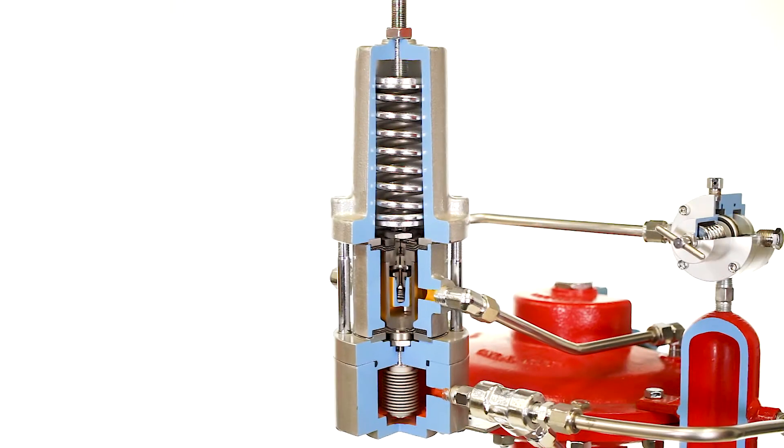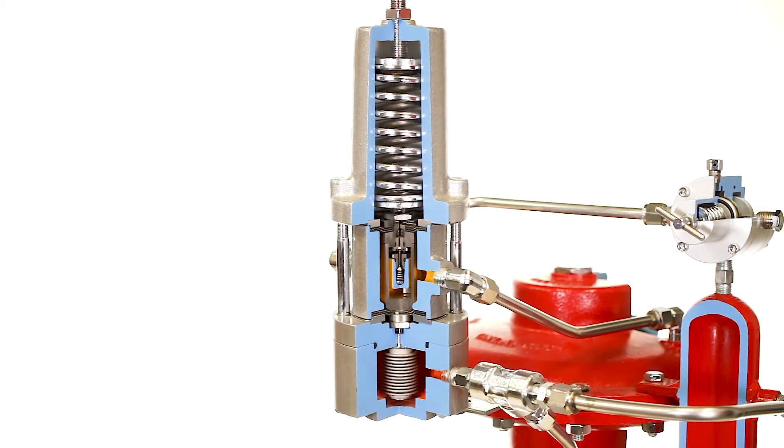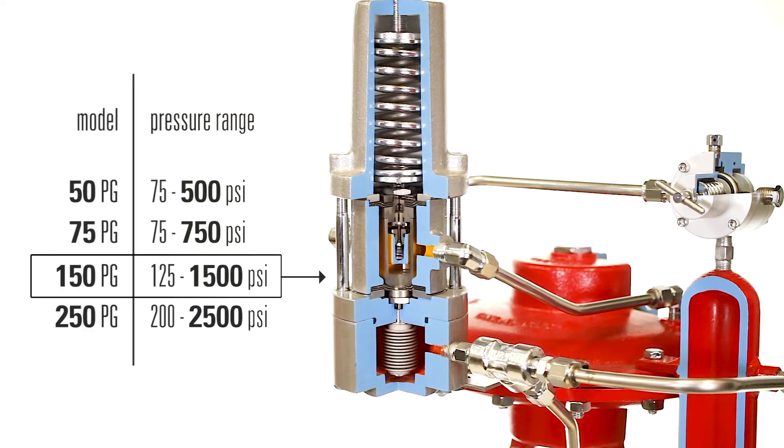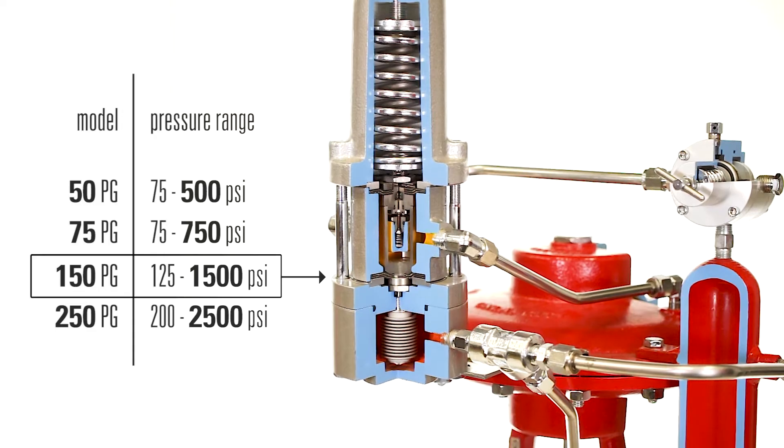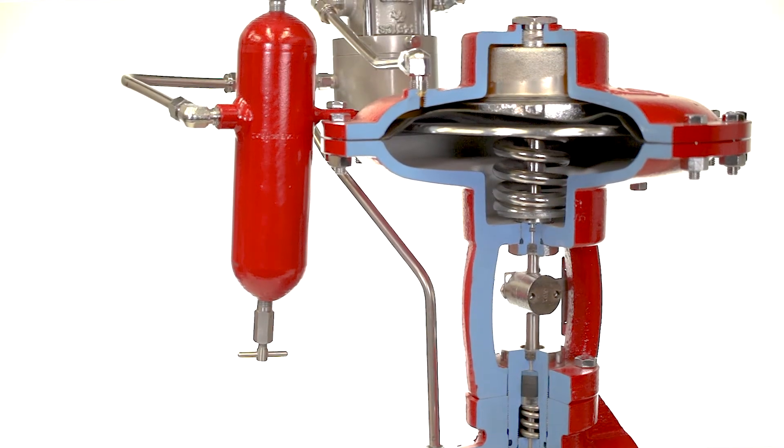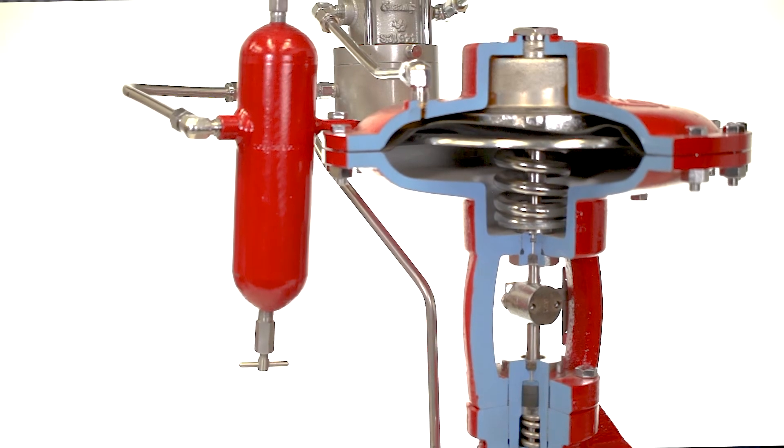Kimray's PG Pressure Pilot is used to monitor and control upstream or downstream pressure between 75 and 2500 psi, depending on the model. It does this by pneumatically positioning a control valve to achieve a desired set point. Here's how it works.